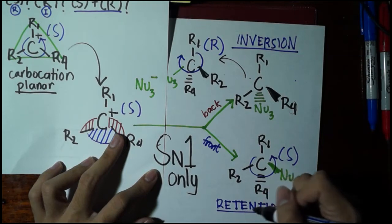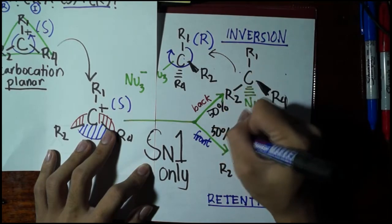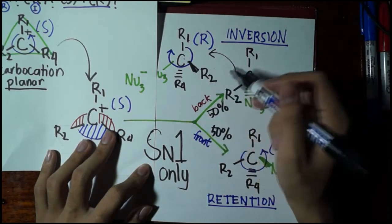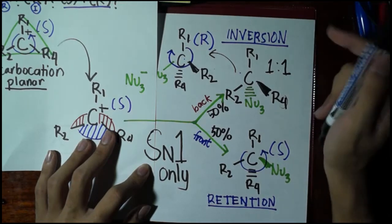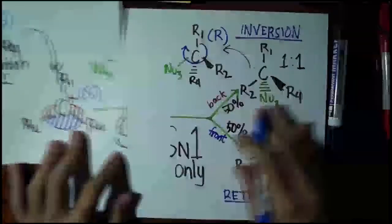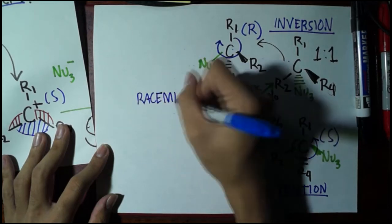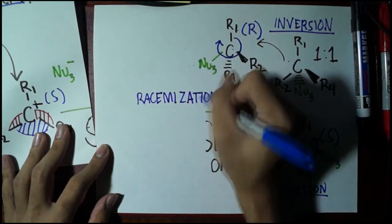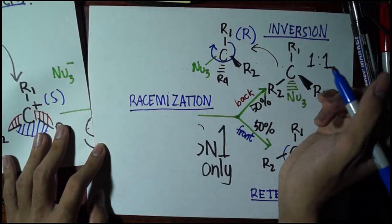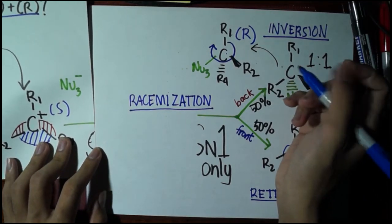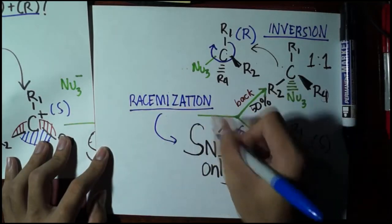Now, research has actually given out that there is actually a 50-50 division between the back and front attack, giving us a 50-50 percent inversion to retention ratio, or 1 is to 1. If that is the case, there is a certain term called to that. So that term is actually known as racemization. So when you say we have racemates of a compound after a reaction, it means that you have a combination of its S and R optical isomers or enantiomers. And this happens in SN1. So meaning in SN1 we have racemization.